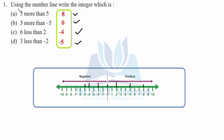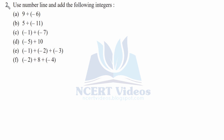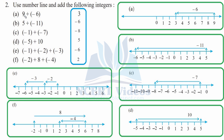That was your question number one. Question two: use the number line again; we have to add the following integers. Part a: nine plus minus six. Initial position is nine — mark an arrow and go minus six, that is towards the left-hand side. Therefore we go six positions towards left: one, two, three, four, five, six. You reach three, therefore the answer is three.